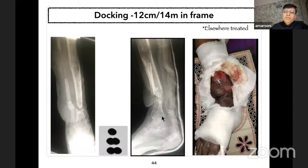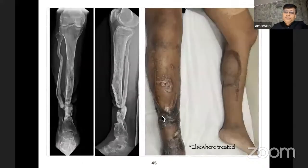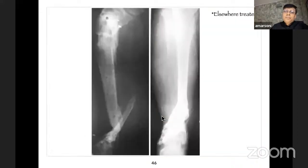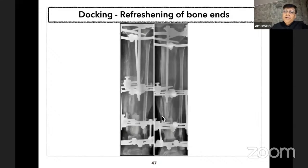This patient was having a 12 centimeter gap, was in frame for 14 months, and docking site non-union led to amputation. Another case: positional non-union with good regenerate was also treated. Another case: united with gross angulation, which is not acceptable.